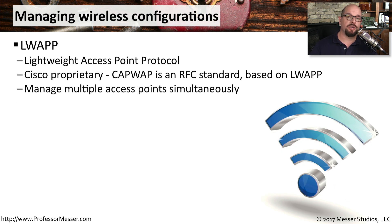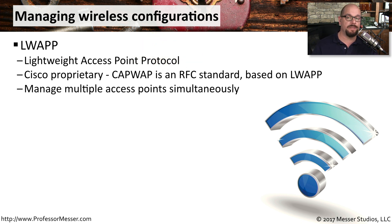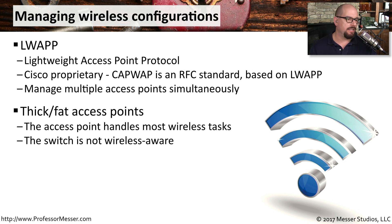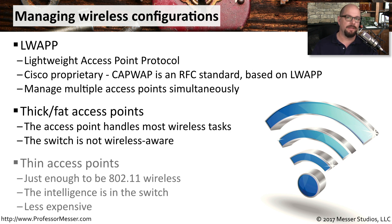Wireless LAN controllers communicate to wireless access points using standardized protocols. One very common protocol is LWAP, the Lightweight Access Point Protocol, which is a Cisco proprietary standard. There is also an open standard called CAPWAP, which allows you to manage those access points simultaneously from the management console. Some access points are configured as thick or fat access points, meaning the access point itself contains all the intelligence to manage communication. Another type is the thin access point, which moves that intelligence to the switches, making the access points less expensive to deploy while centralizing management in the connected switch.